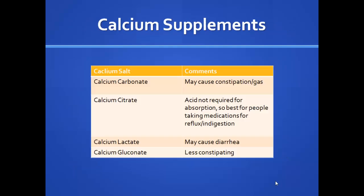There are different calcium formulations. Calcium carbonate can cause constipation and gas. We prefer calcium citrate — brand name Citracal — which is less constipating and doesn't require stomach acid for absorption, making it ideal for people on acid reducers like Prilosec or Pepcid. Calcium lactate may cause diarrhea, and calcium gluconate is rarely found over the counter. Most commonly you'll find calcium carbonate or calcium citrate.